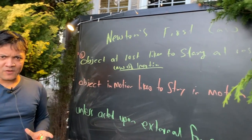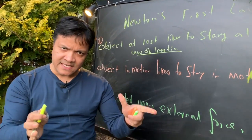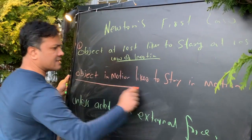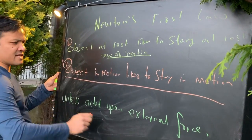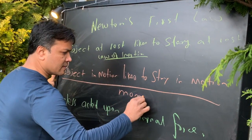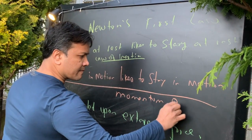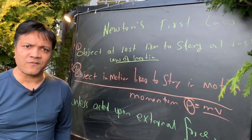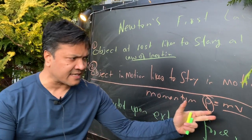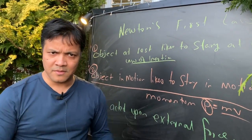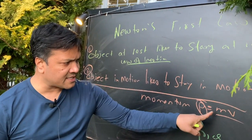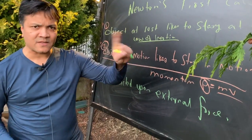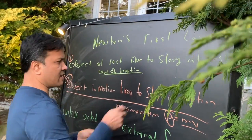Newton's First Law has three parts. Part one is the law of inertia. One property of inertia is that if mass increases, inertia increases; if mass decreases, inertia decreases. Part two is momentum — p for momentum, m for mass, and v for velocity. If velocity increases or mass increases, then momentum increases. Momentum depends on both mass and velocity, while inertia depends on mass only.